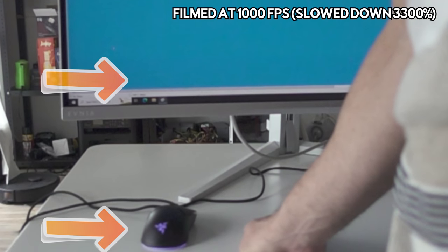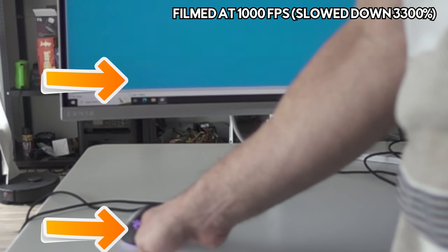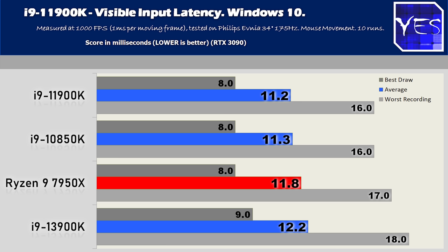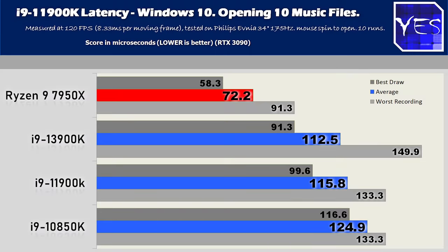The 11900K did extremely well in Windows 10. Starting with input latency — a lot of people are concerned about hitching — the 11900K actually did on average the best out of the four CPUs tested. This was done with a 1000 FPS camera on a fresh install of Windows 10 before any applications were installed to get raw input latency numbers. For rapid file openings — 10 files opened in Windows 10 — it passed with flying colors, ever so slightly faster than the 10850K, which makes me consider switching to this as my daily driver.